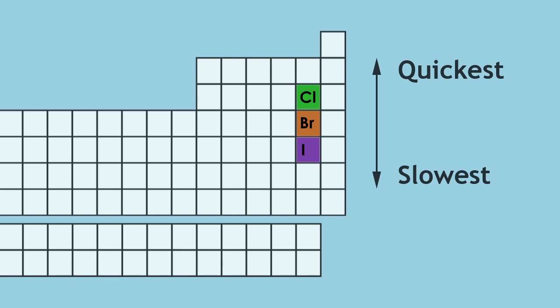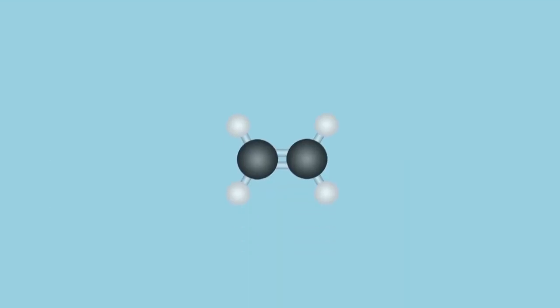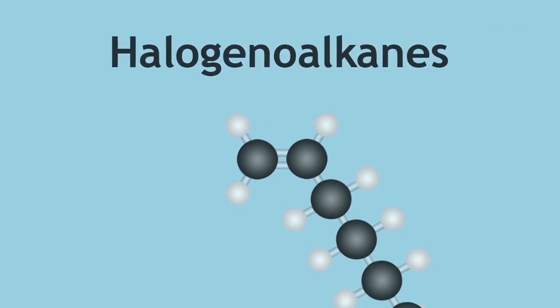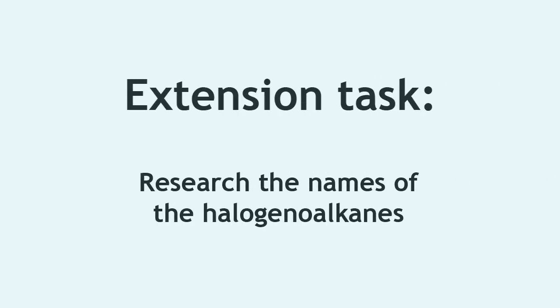In these examples, we have used ethene, but the same chemistry applies for larger alkenes. The products formed are always halogenyl alkanes, and it would be a good extension task to research the naming of these molecules.